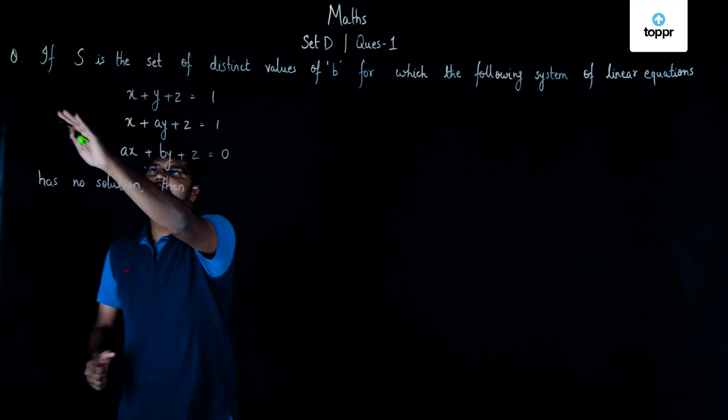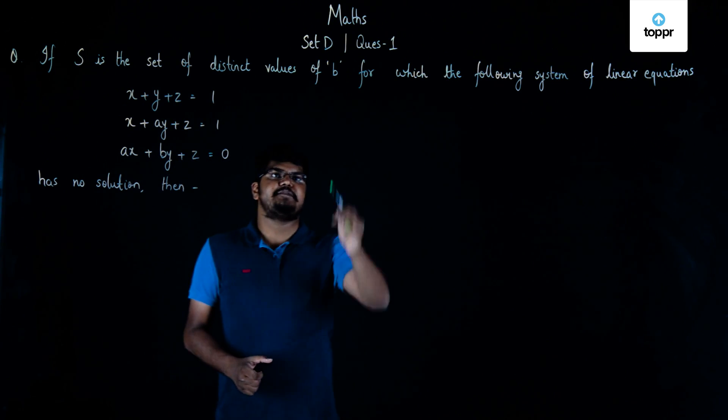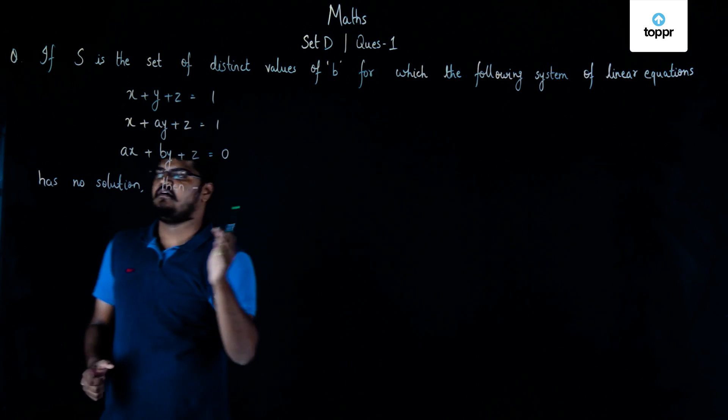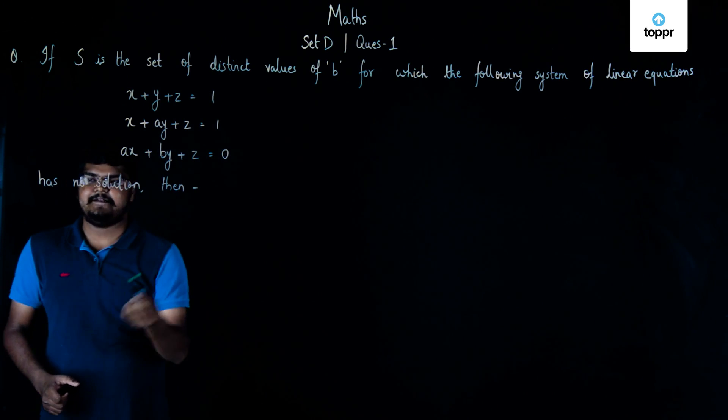The question is, if S is the set of distinct values of B for which the following system of linear equations, the given equations are here, has no solution, then?